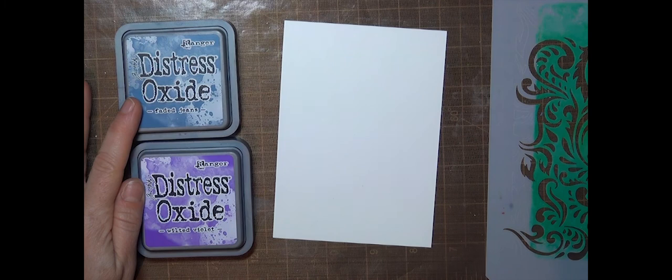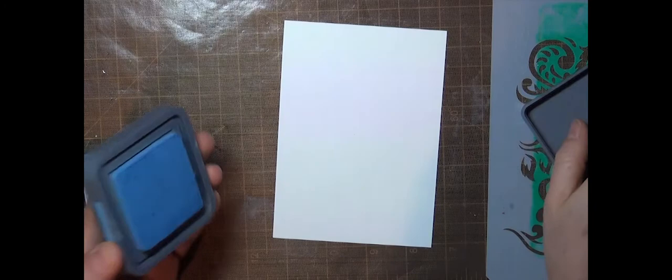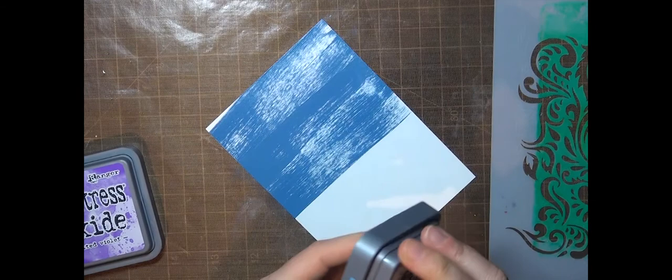For this technique you need to start off with a water reactive ink or a watercolor medium. I'm using these Distress Oxide inks, and I'll be working throughout the video with 140 pound Fabriano Studio Hot Press watercolor paper.